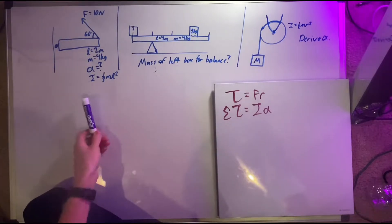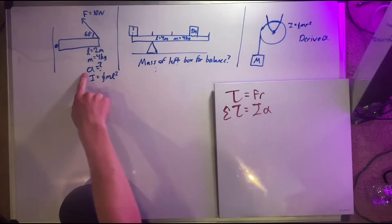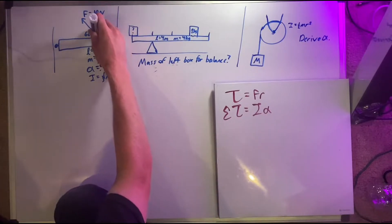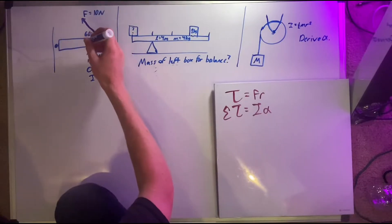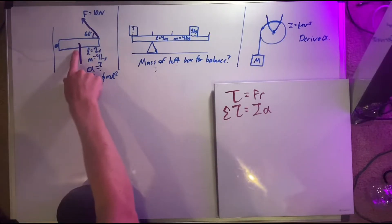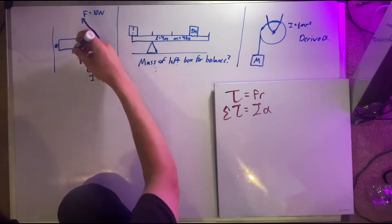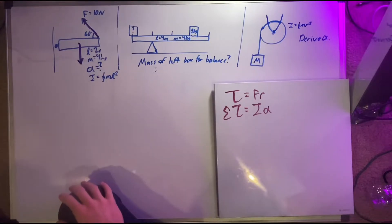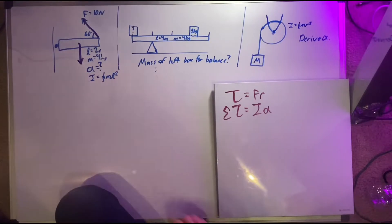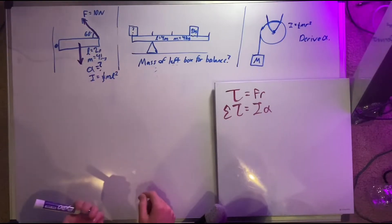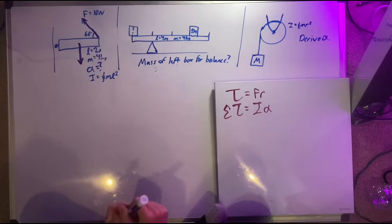Now that we know this, let's try to solve for the angular acceleration. First, let's label all of the forces that we know. There's a force being applied here and a force being applied here — that's the weight, which you have to remember. Keep in mind that gravity always acts on the center of mass, meaning that, assuming this is an evenly distributed rod, the weight acts at one-half the length, so it acts at one meter.